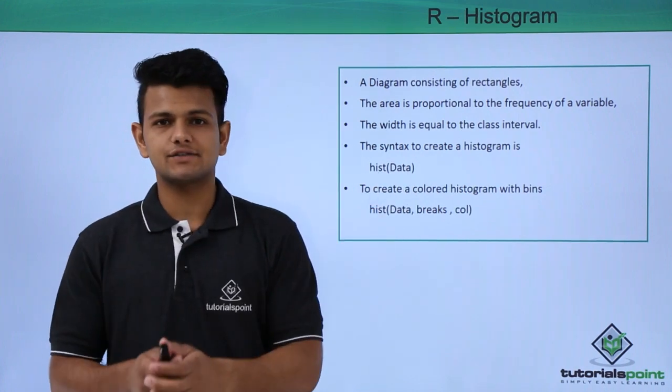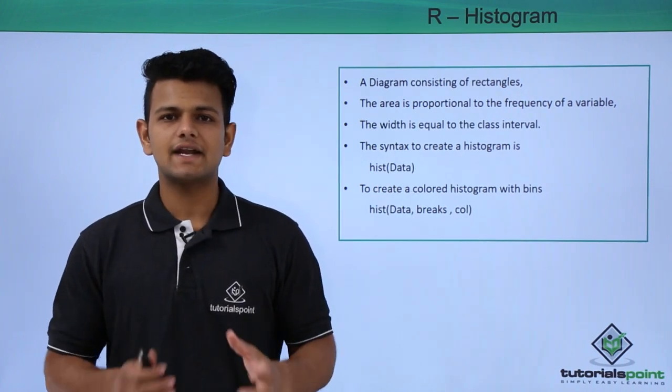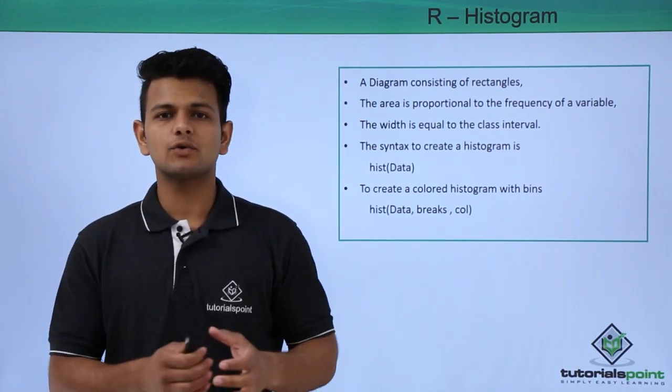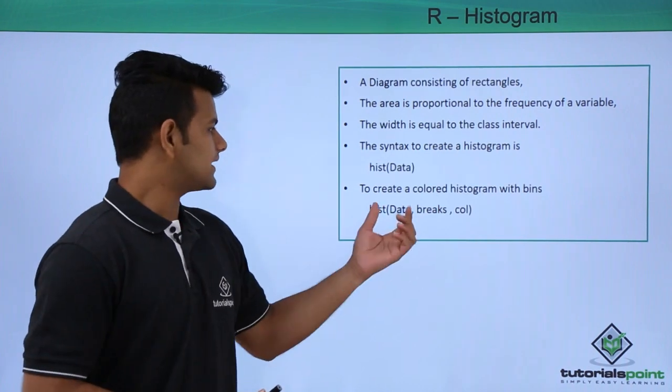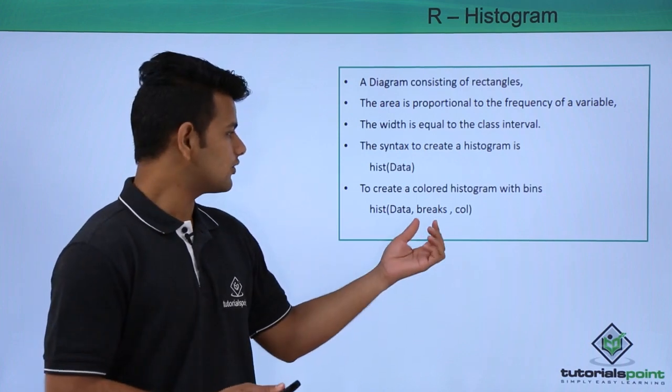The syntax to create a histogram is hist() with the data inside brackets. Another method is hist(data, breaks, col) where we specify the data, the number of breaks,